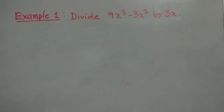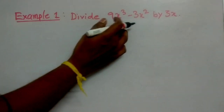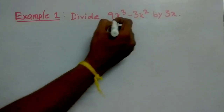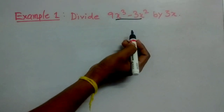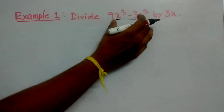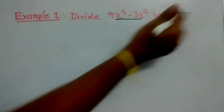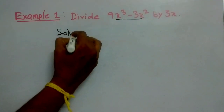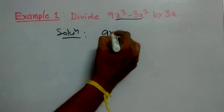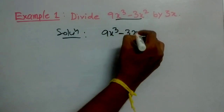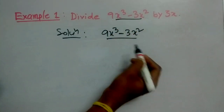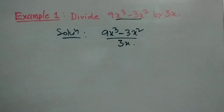Here in this question, divide 9x cubed minus 3x squared by 3x. Here it is a polynomial and it is a monomial. So we have to divide this by this. So let us write it as 9x cubed minus 3x squared divided by 3x.